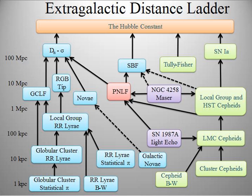Almost all astronomical objects used as physical distance indicators belong to a class that has a known brightness. By comparing this known luminosity to an object's observed brightness, the distance to the object can be computed using the inverse square law. These objects of known brightness are termed standard candles. The brightness of an object can be expressed in terms of its absolute magnitude, which is derived from the logarithm of its luminosity as seen from a distance of 10 parsecs.